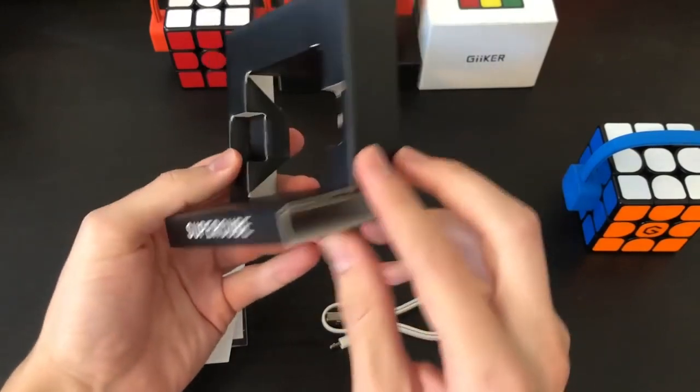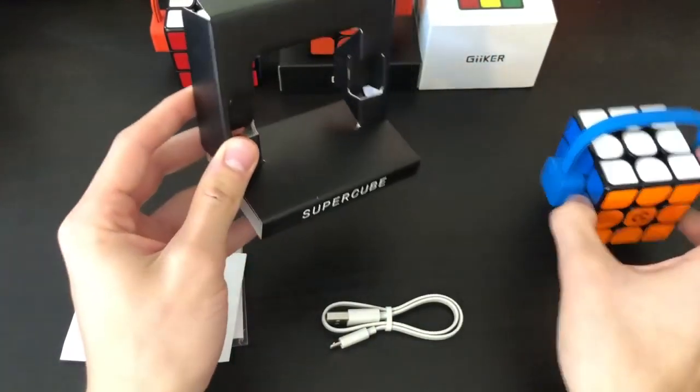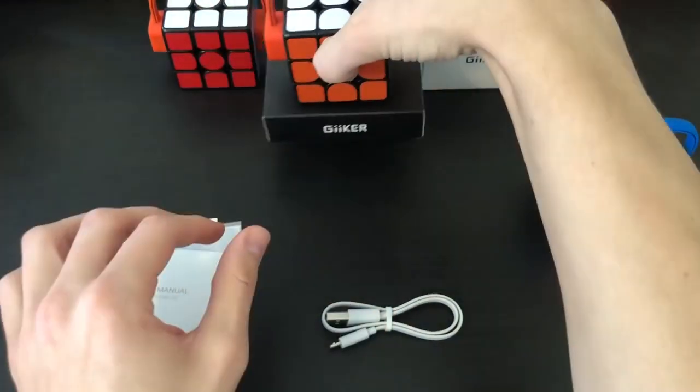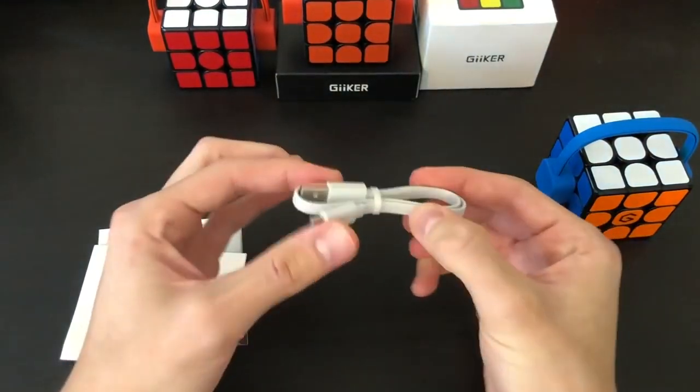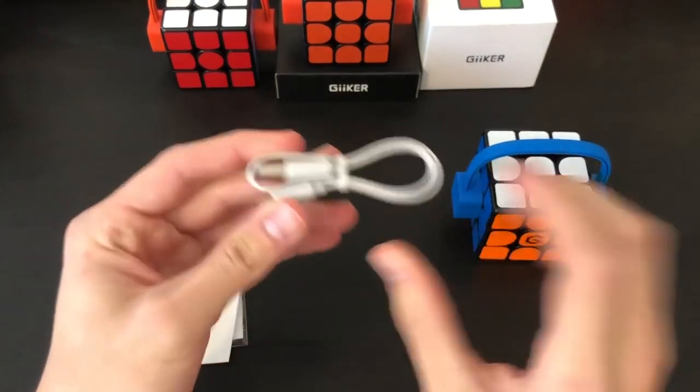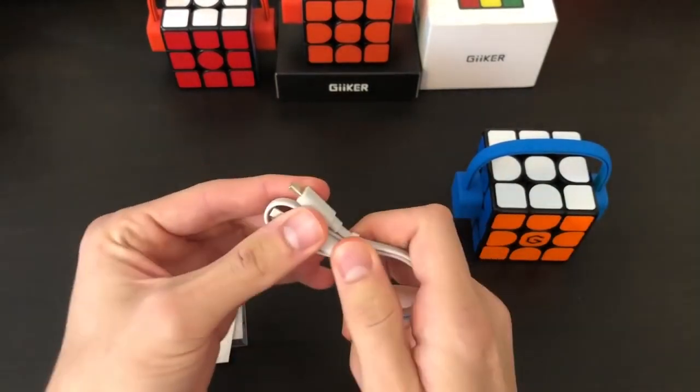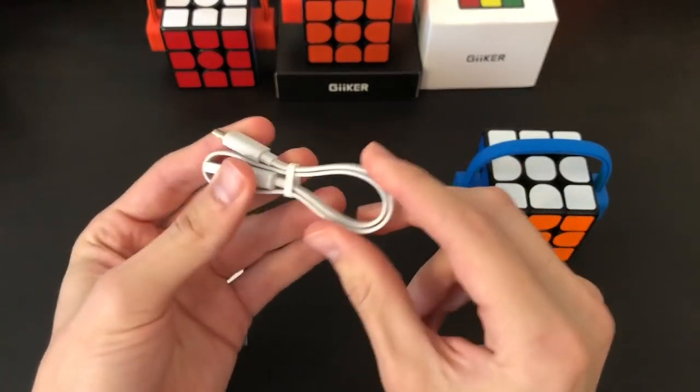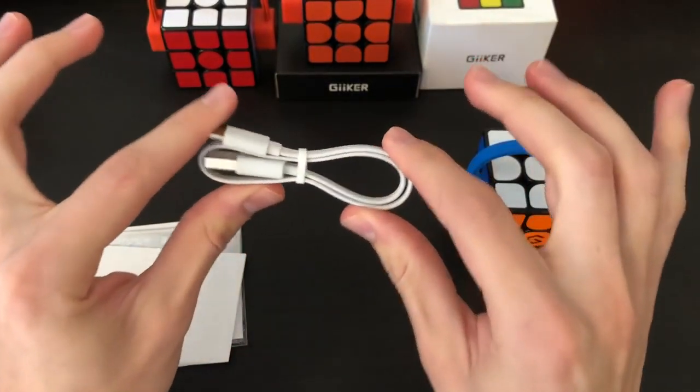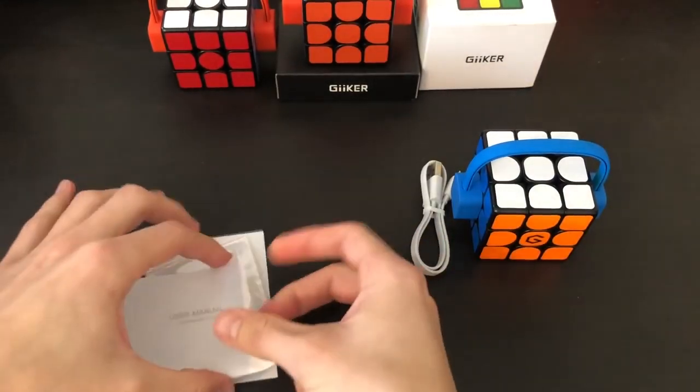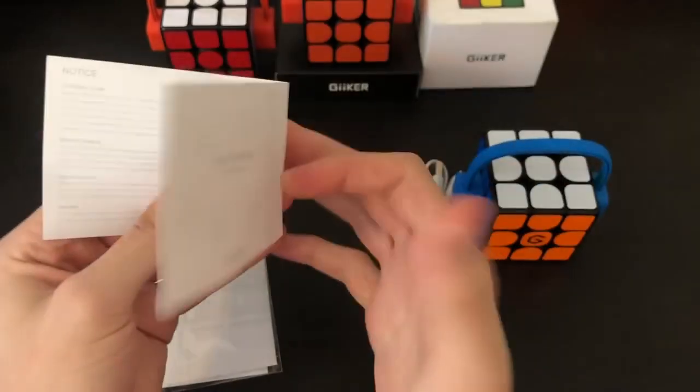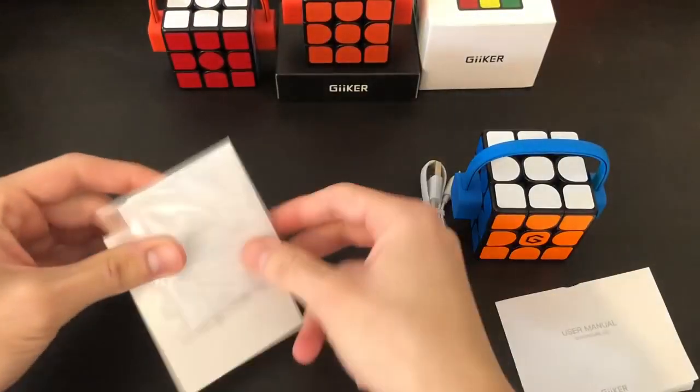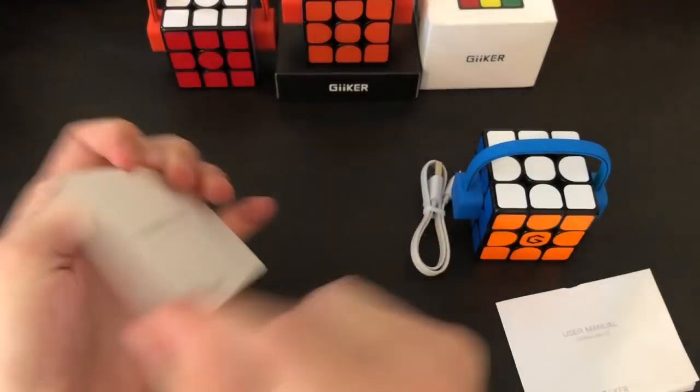So it comes with this cool little cardboard thing which can be used as a little display case. I used this other one that came with the original one to display my original Gicker Cubes. Now this one actually comes with a charging cable, which is nice because the original one did not. I actually had to ask a friend to borrow theirs. So it's nice that they actually put one in the package. And here we have the user manual which does have English on it, which is nice. The previous one did not.